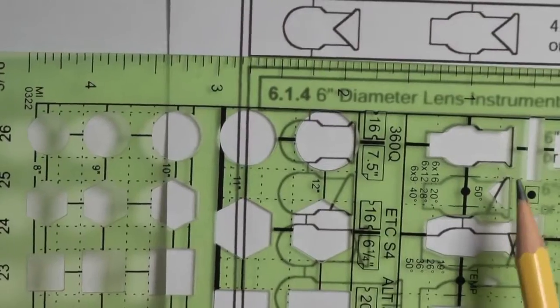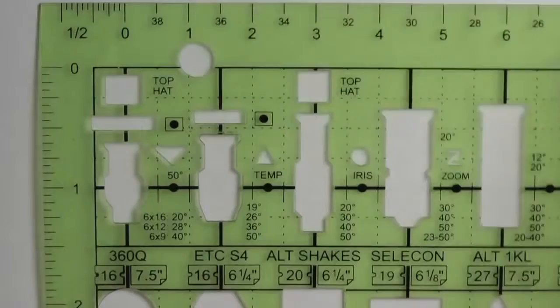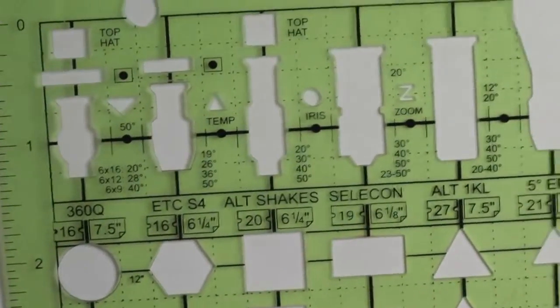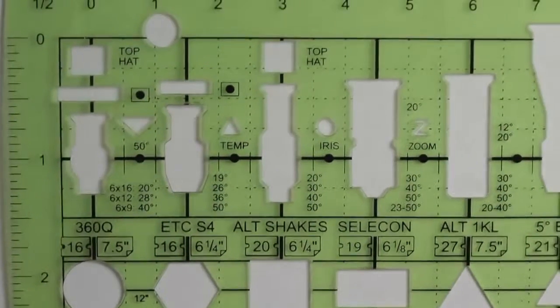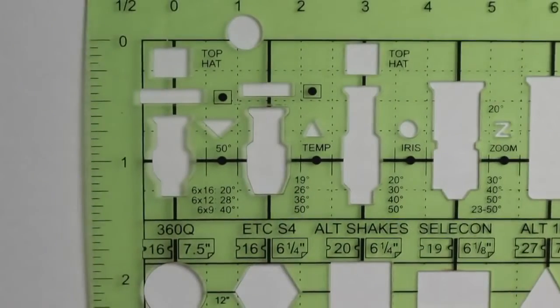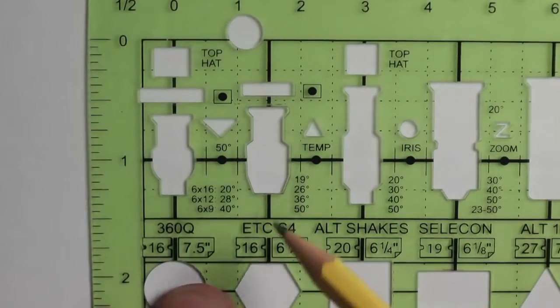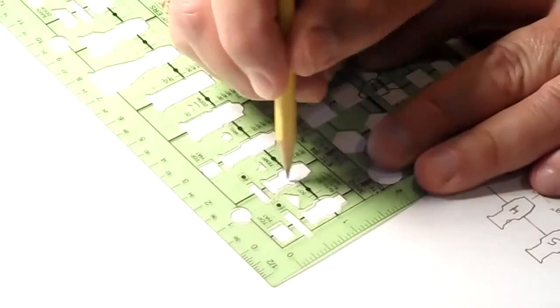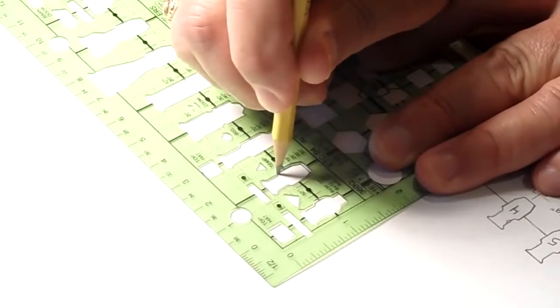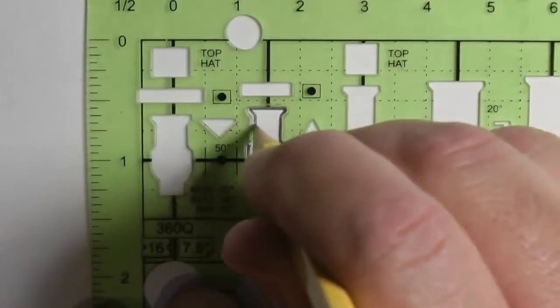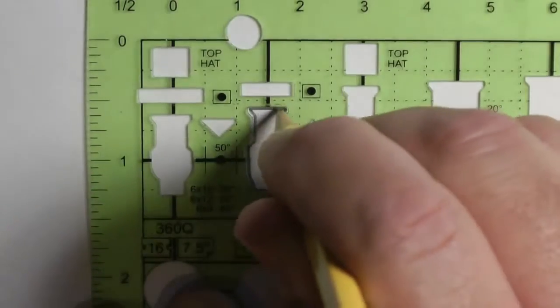So if we take this template and we put it on our piece of paper like so, and we take our pencil, we simply hold our pencil relatively upright. We follow the pattern of the plastic. There's that one.